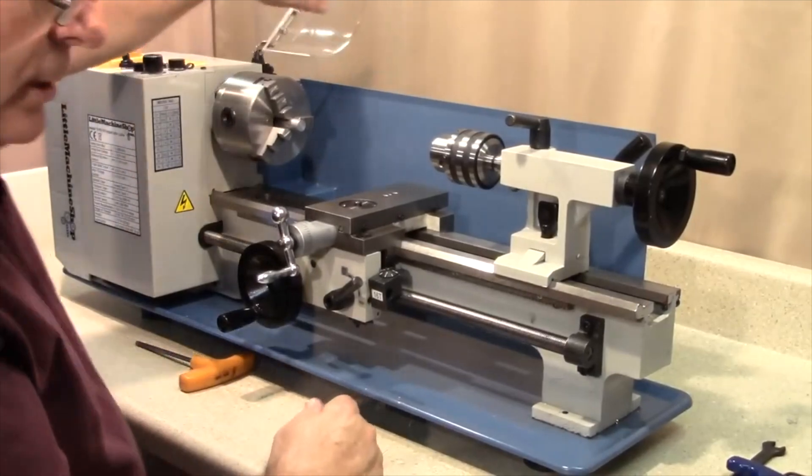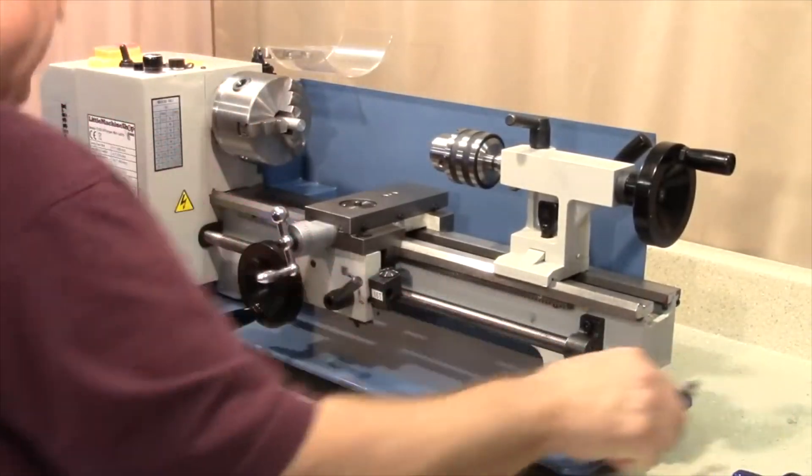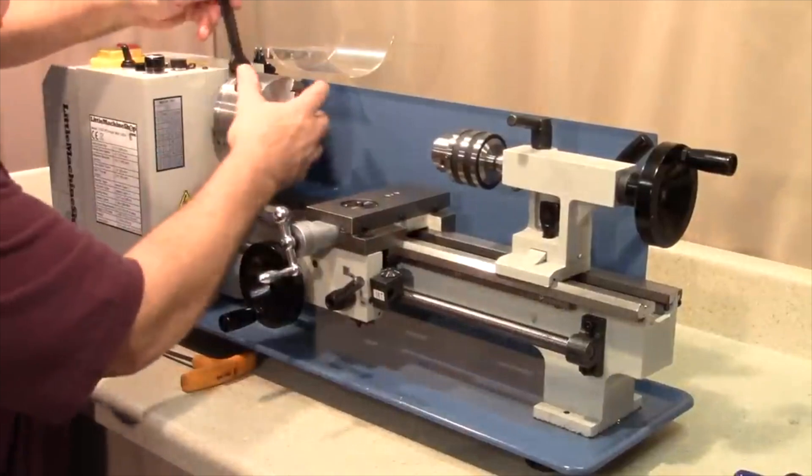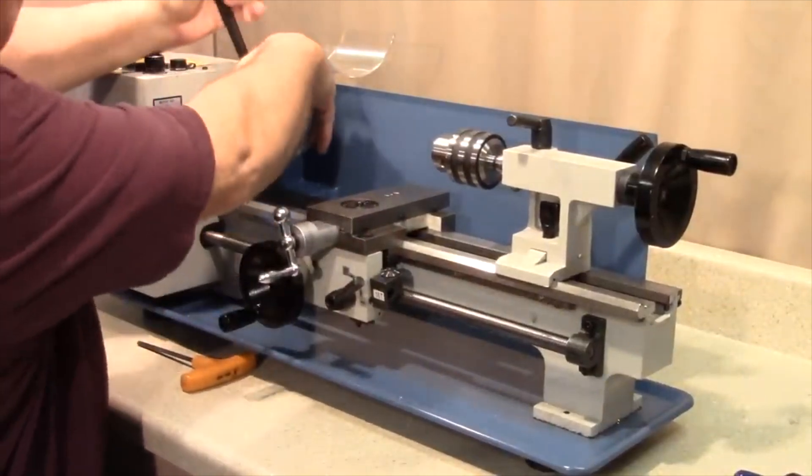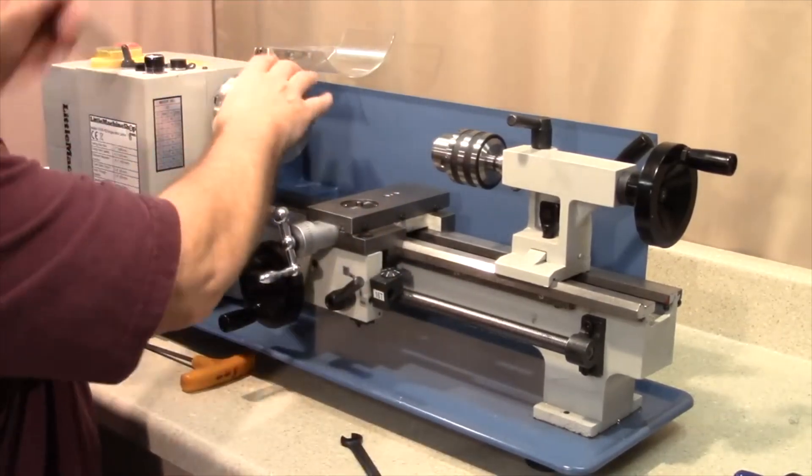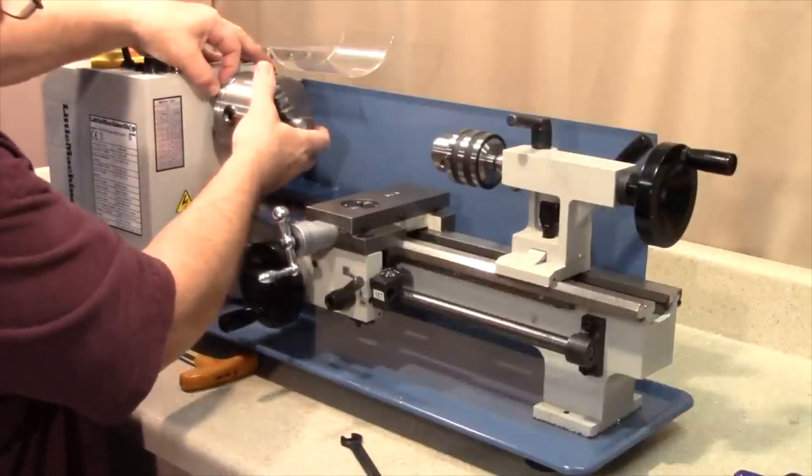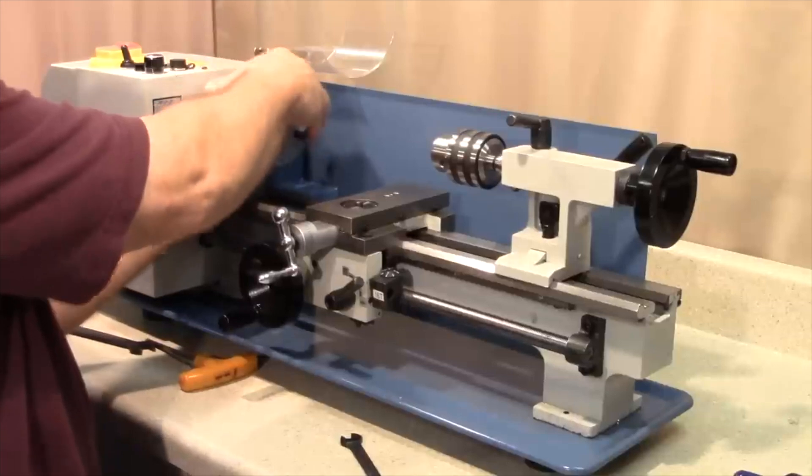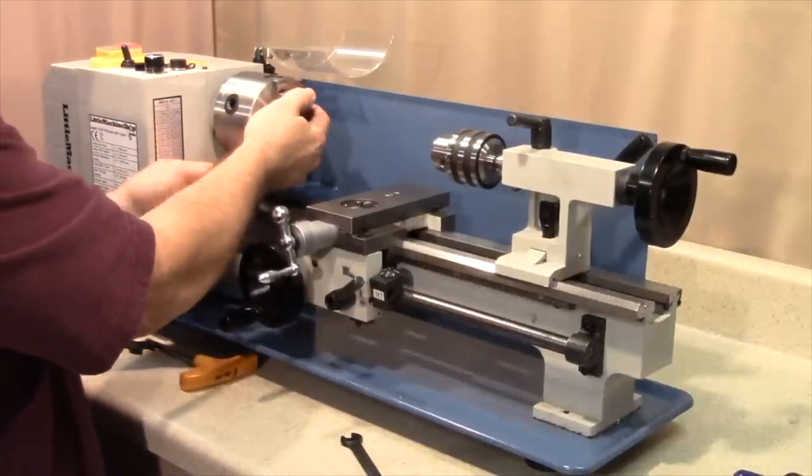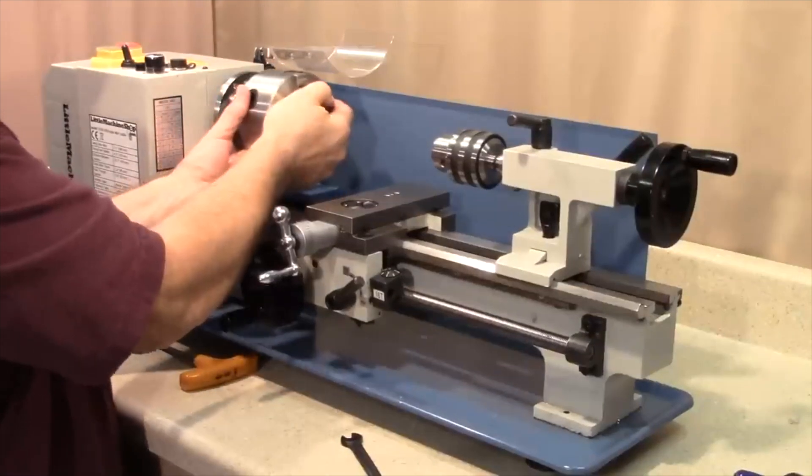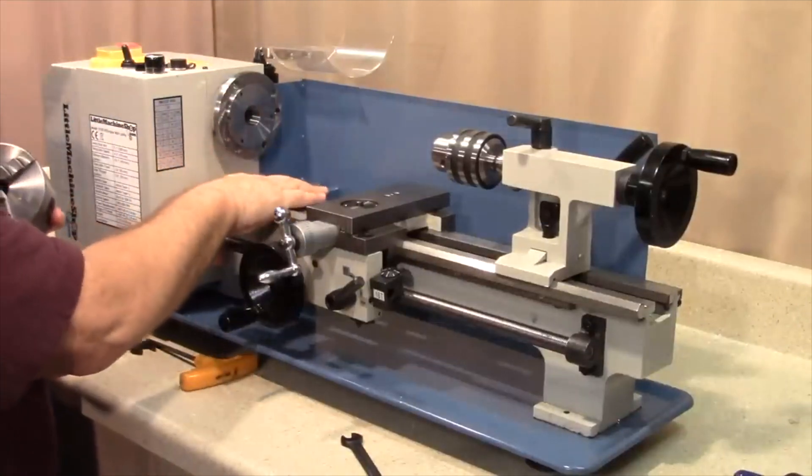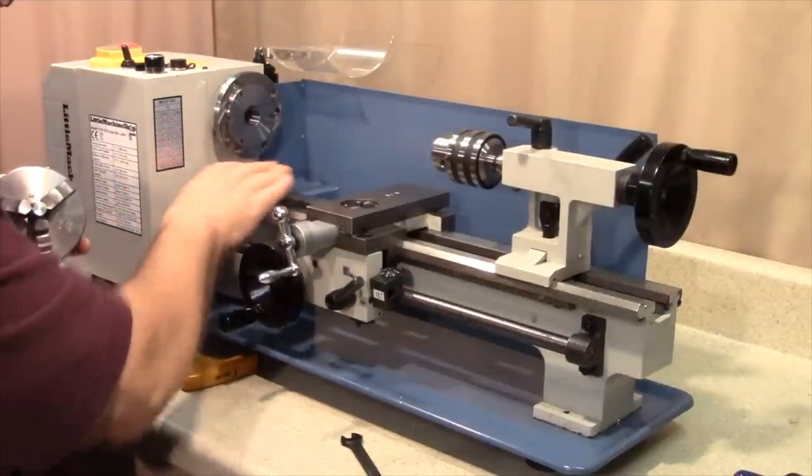I also want to remove the chuck. This particular lathe uses a larger wrench because it has a 4 inch chuck. I'll just spin those nuts off. I've done this enough times that I'm pretty confident I'm not going to drop it, but if you're new to this it's a good idea to put a protective board or something underneath there so you don't bang up the ways.